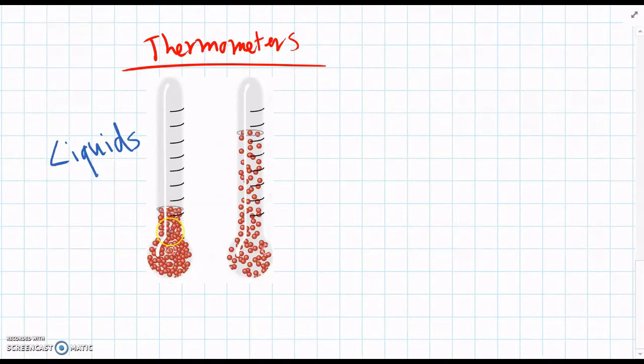So a thermometer has a red colored dye, and at a cold temperature those particles aren't moving very much, and so they don't take up as much space. But then when heat energy comes in and the liquid gets hotter, it expands upwards. And so the liquid takes up more space, and that means the top of the marker goes higher on the thermometer, so we can read the temperature.